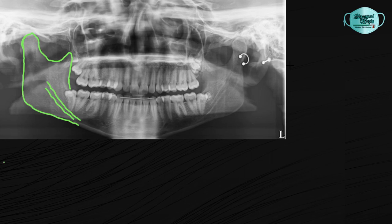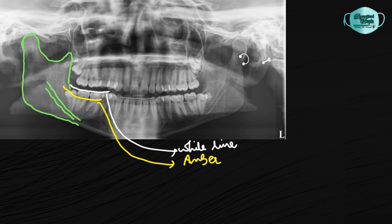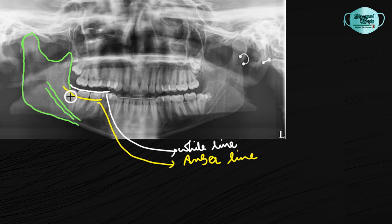This is our second OPG. We mark the white line on the occlusal surface of the first and second molars up to the third molar region. The amber line runs from the alveolar bone distal to the third molar to the interdental septum between the first and second molars. The red line is dropped perpendicular from the amber line to the CEJ of the third molar; in cases of distoangular inclination, the red line is dropped on the CEJ of the distal surface of the tooth.